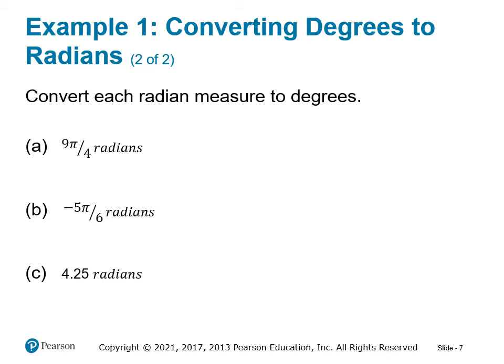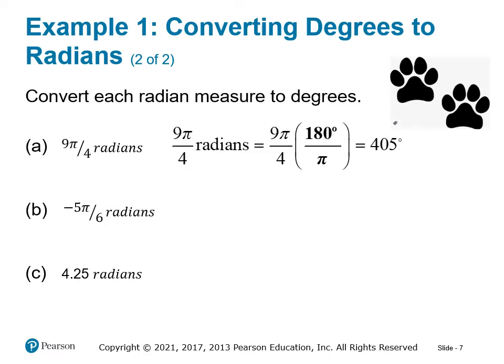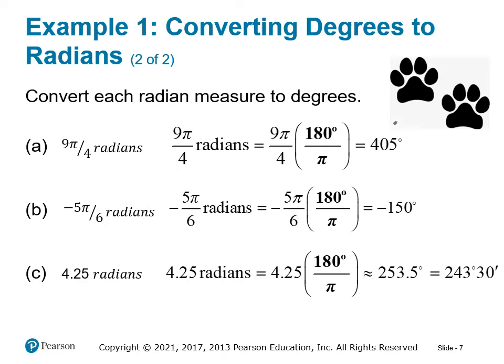Now let's try converting from radian measures to degrees. Hit the pause button and try these three problems, then hit play when you're ready. For 9 pi over 4 radians, we multiply by 180 over pi — the pi's cancel out — and we get 405 degrees. For negative 5 pi over 6, we get negative 150 degrees. For 4.25 radians, we multiply 4.25 times 180 divided by pi on the calculator, and we get approximately 253.5 degrees, which can also be converted into degrees and minutes.